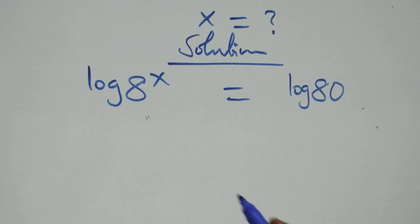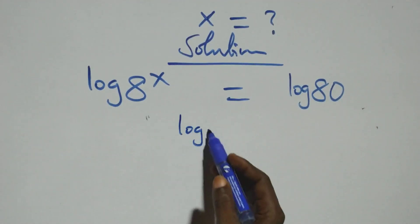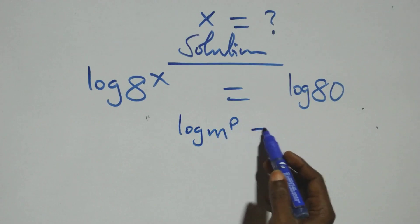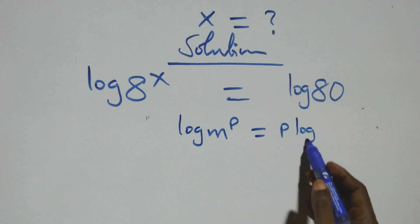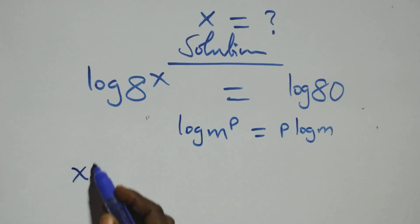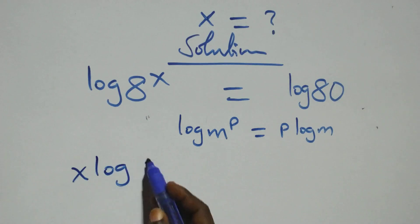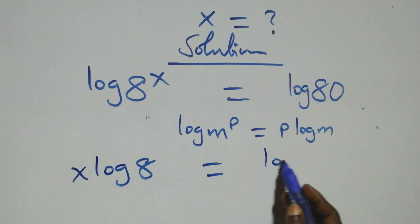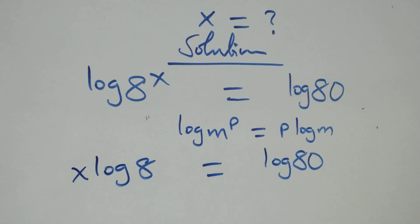We apply the power rule of logarithm. When we have log M raised to power P, this is the same as P log M. So this becomes X log 8 equals to log 80.